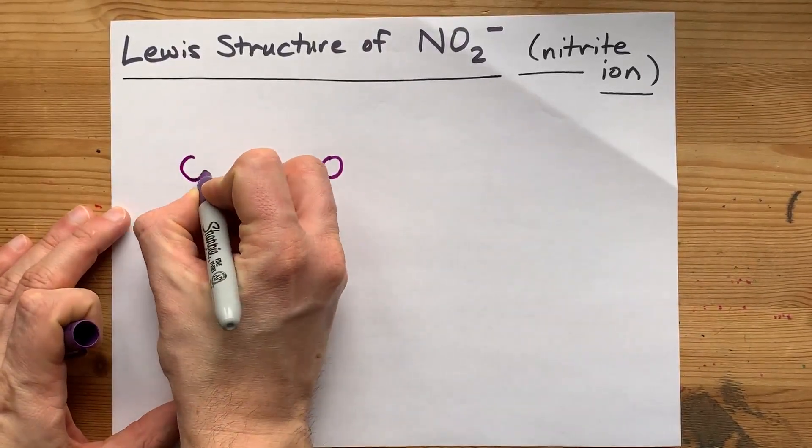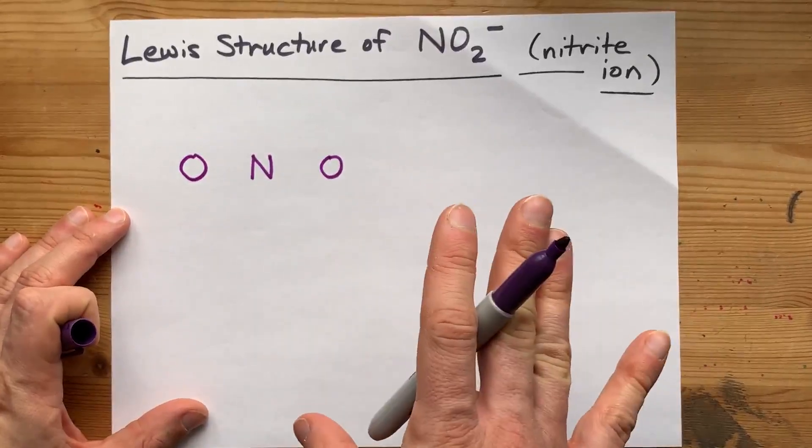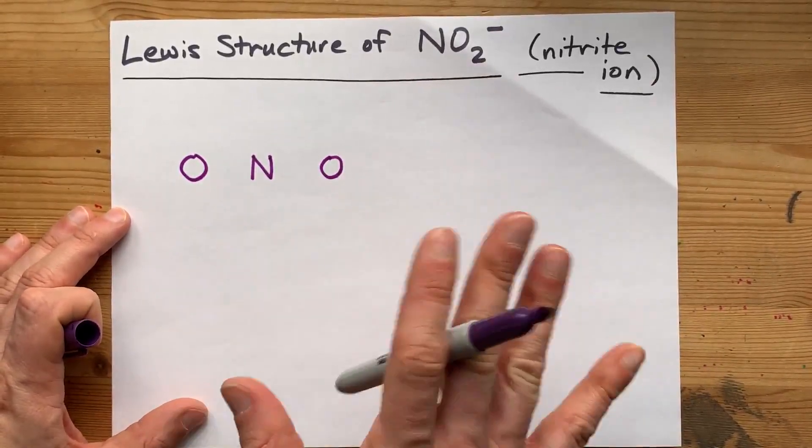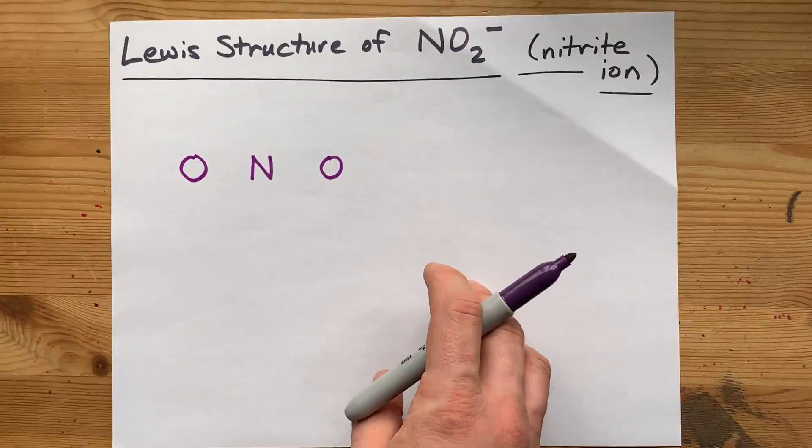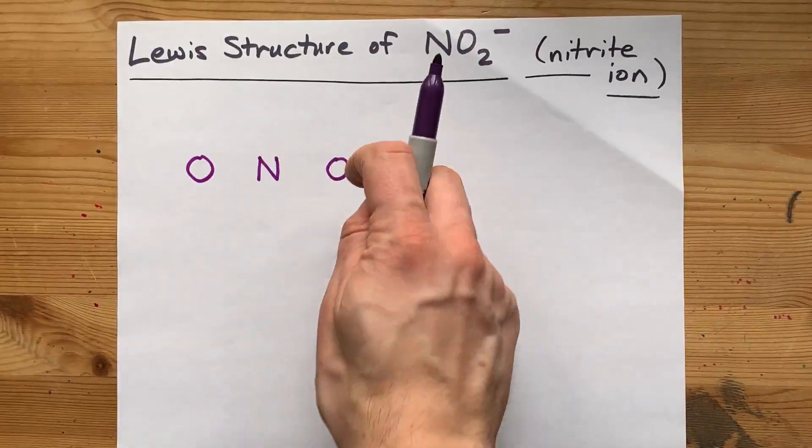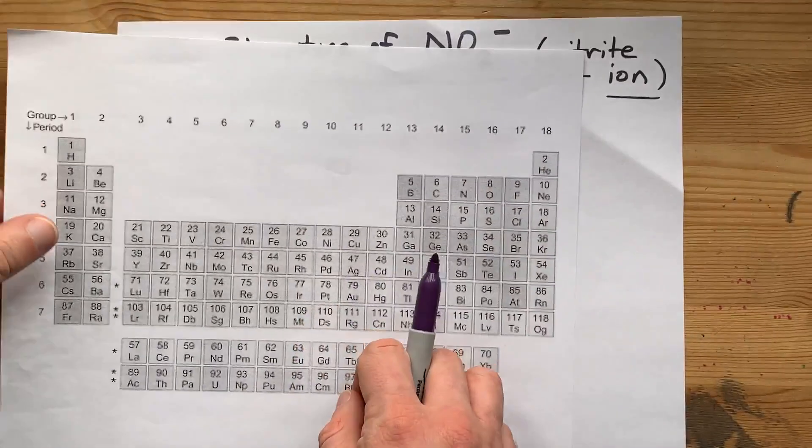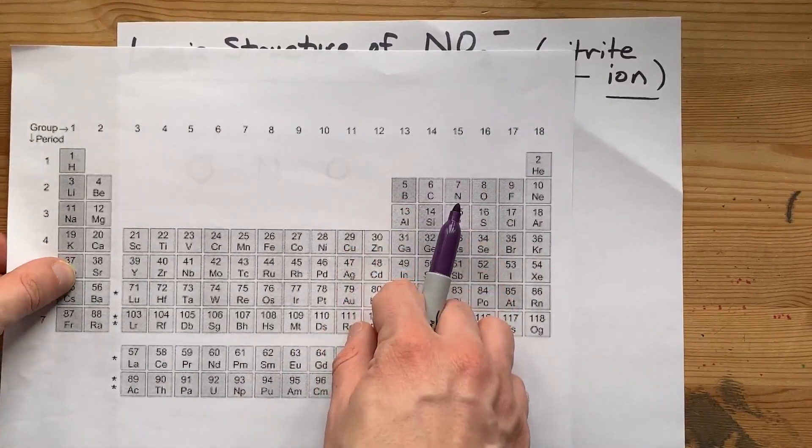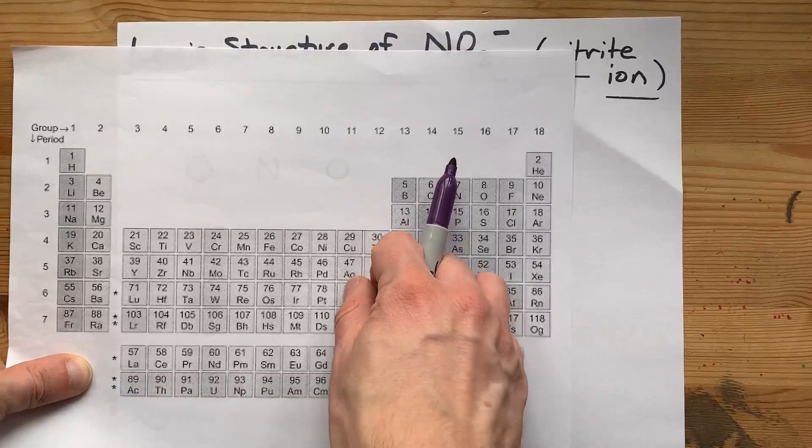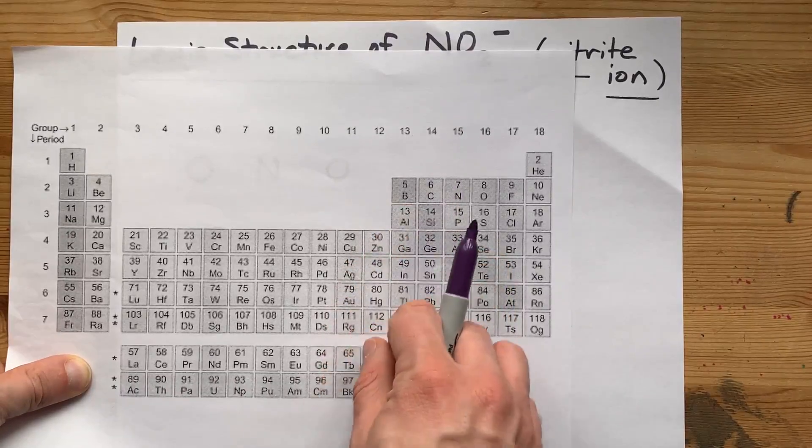So I'm going to put an oxygen on either side. Here's my base structure for NO2, but I haven't filled in any electrons. In order to draw the Lewis structure of something made only of non-metals, I count the number of valence electrons that each atom brings. Nitrogen brings five valence electrons.